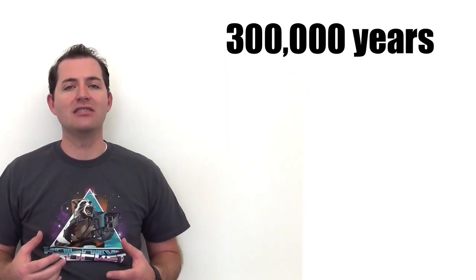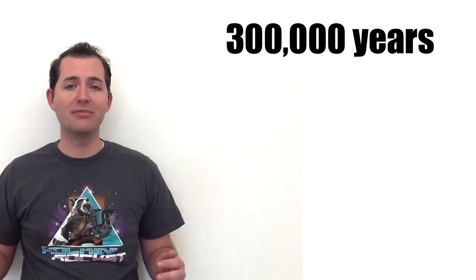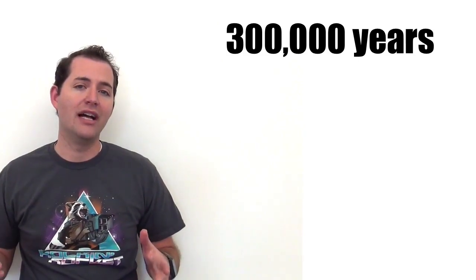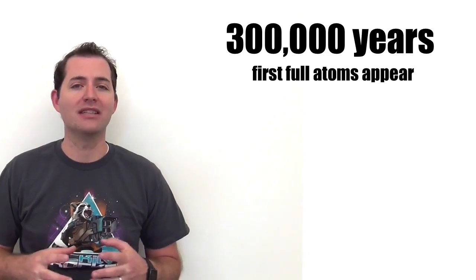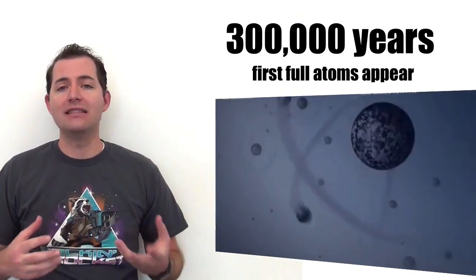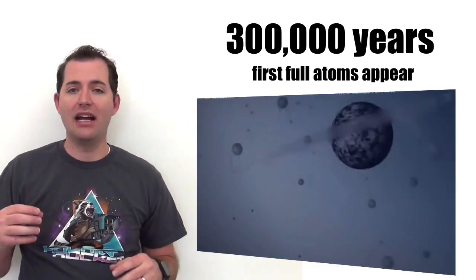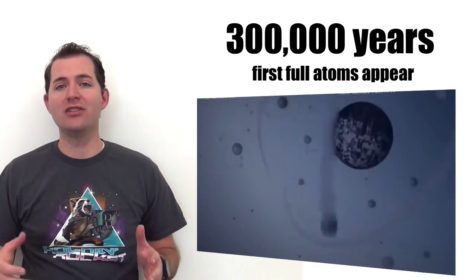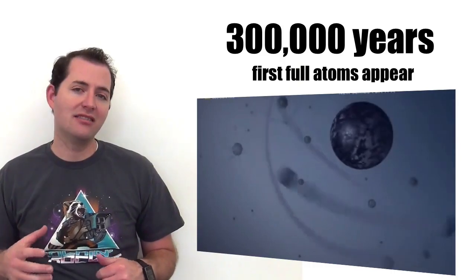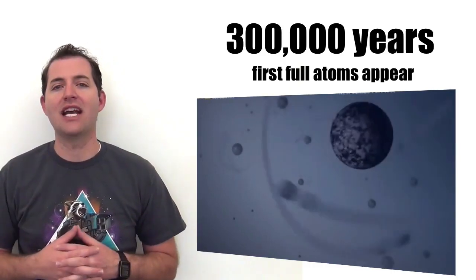At about 300,000 years, the universe had continued to expand and continued to cool, and this marked the first time that we had full atoms in the universe. This is atoms both with nuclei and electrons around them. And the electrons that were in the universe first began to attach to the ions that were formed about three seconds after the Big Bang.